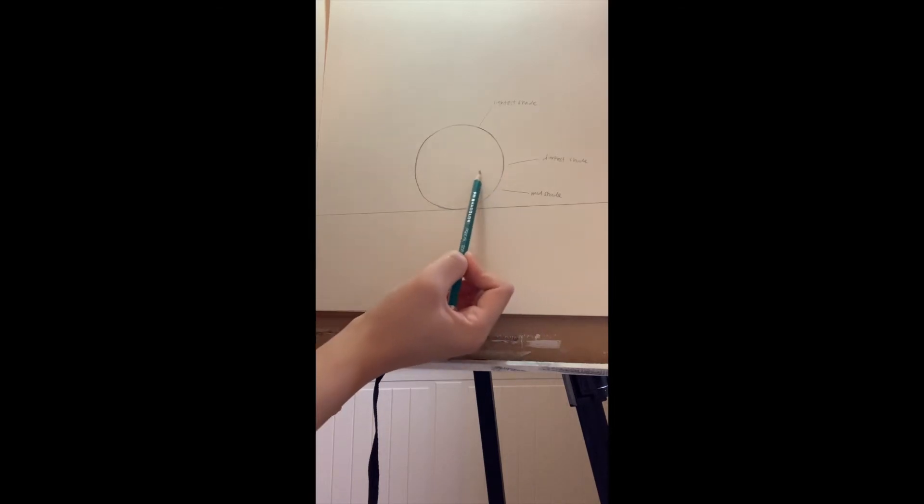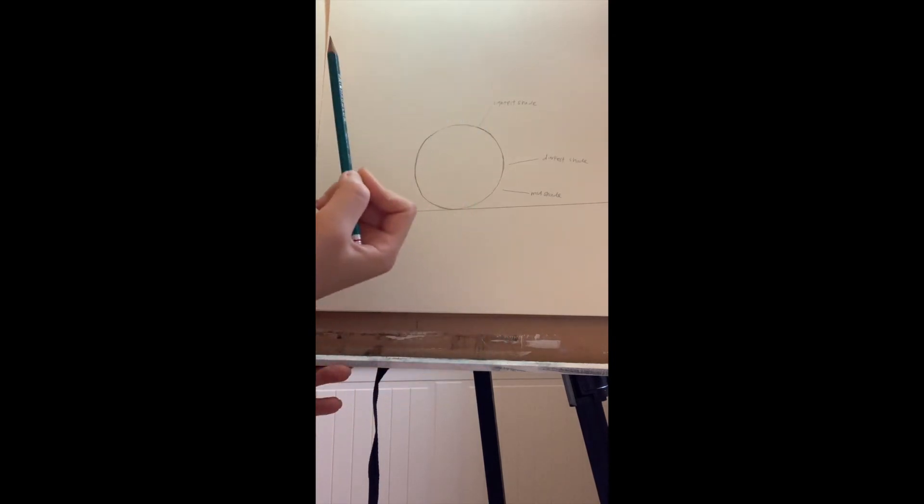Below right here is going to be the darkest shade, and then the mid-shade will be right below here. We're going to keep this part empty. Okay, so I'm going to quickly show you guys how you can shade it.